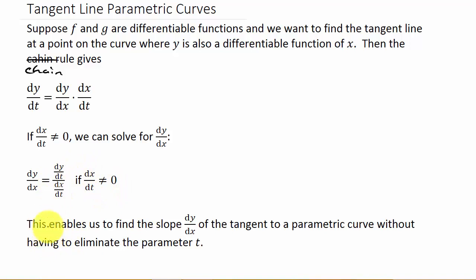So by finding dy/dx, this lets us find the slope of the tangent line. Because when you find the slope of the tangent line, you take the derivative of the function and then evaluate it at that point, and that gives you the slope. Also it keeps us from having to eliminate our parameter t.